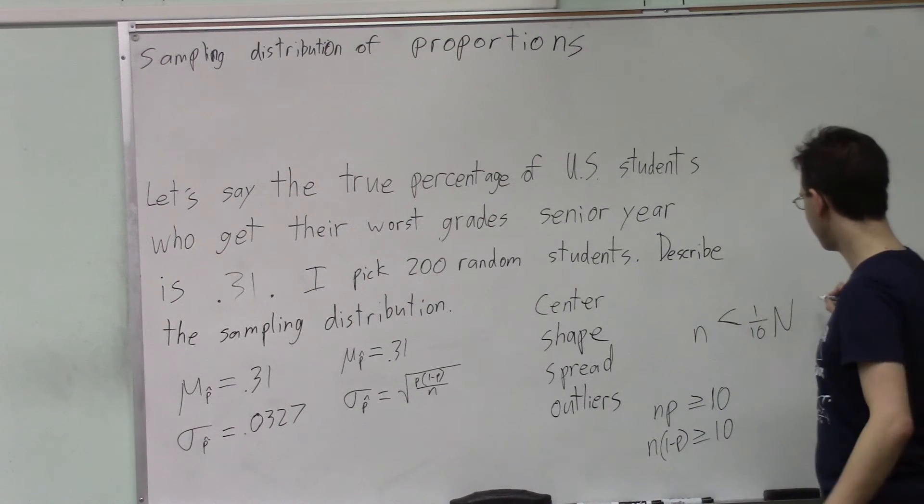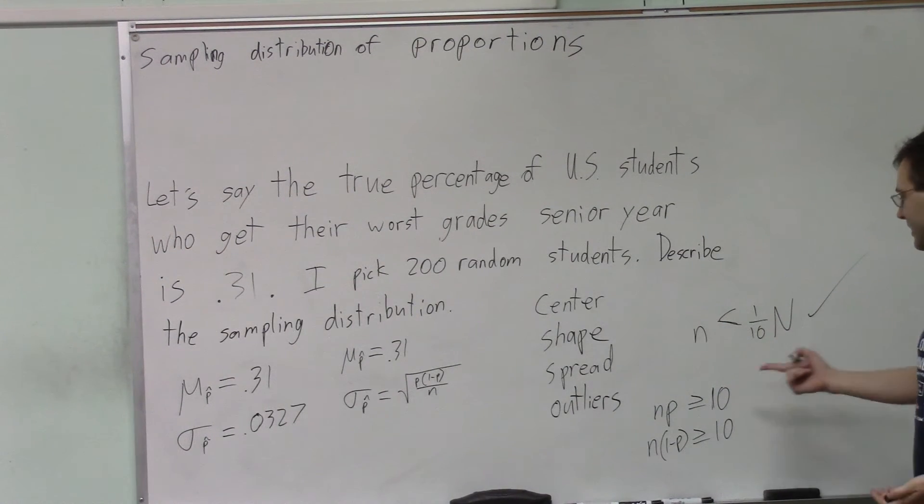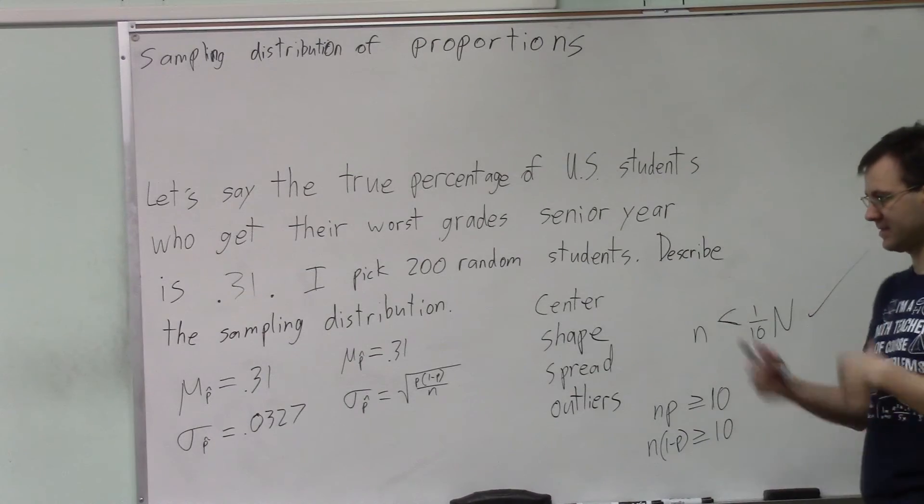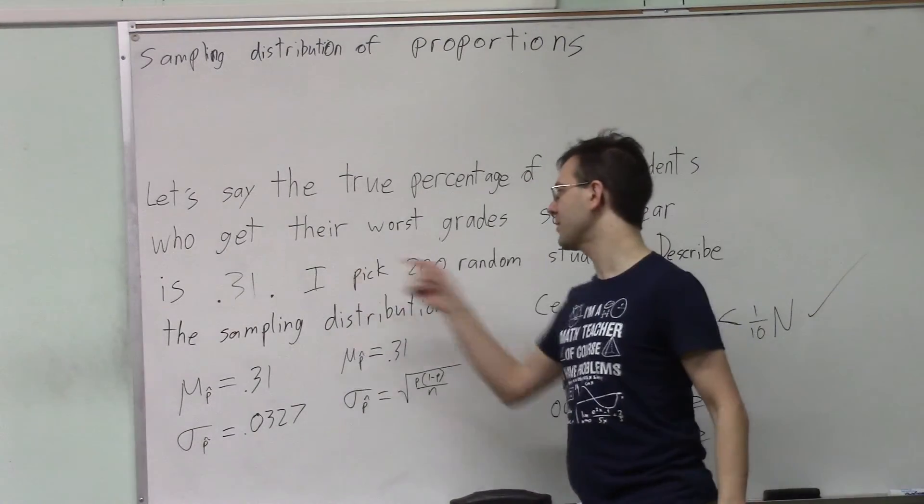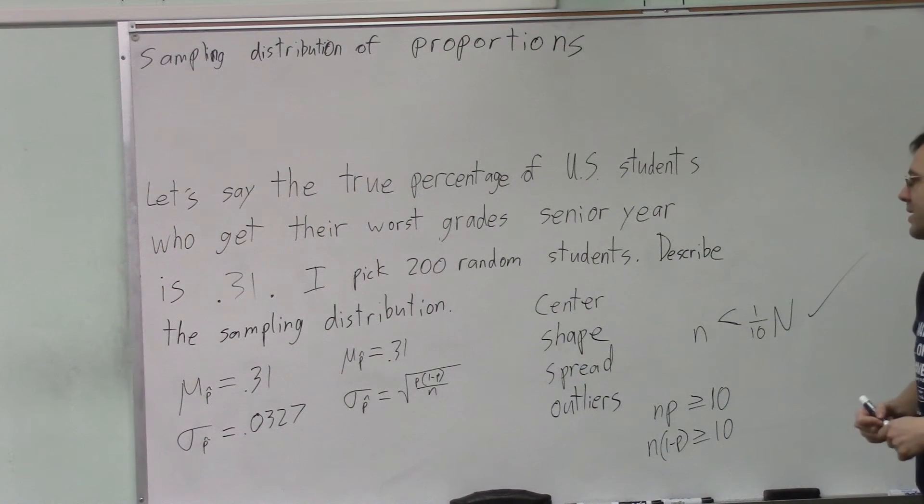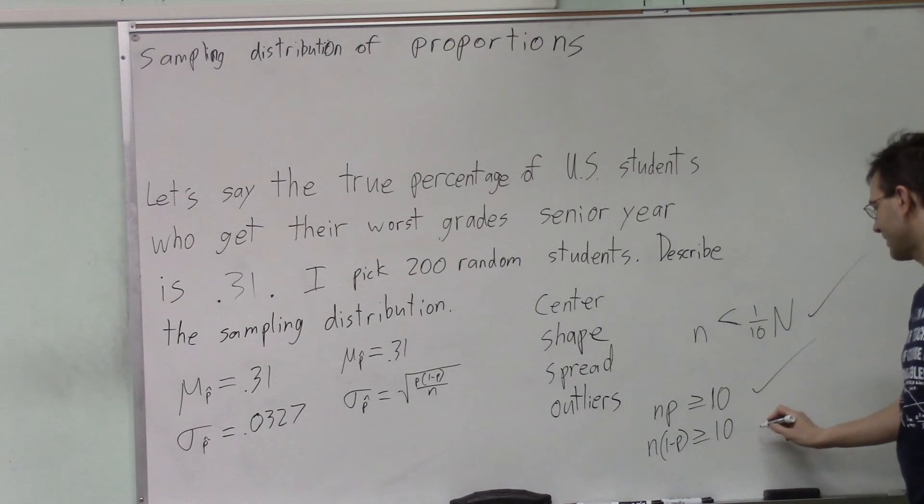There will be a lot of this checking of conditions happening later. Next, do we expect at least 10 successes that the distribution will be shaped normally, and 10 failures that the distribution will be shaped normally? Well, we expect 31% of those 200, or 62 students, to have their worst grades senior year. That is definitely more than 10. And the remainder is way more than 10.